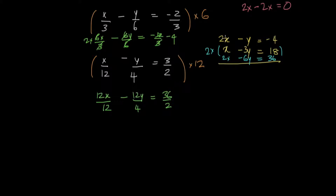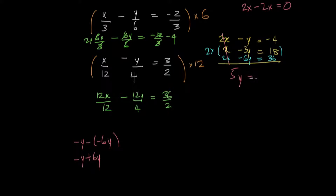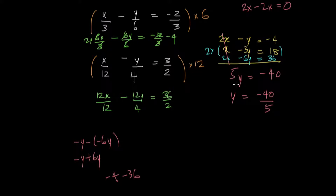If I subtract those, they cancel out. Negative y minus negative 6y gives me negative y plus 6y, and that just leaves me with 5y. Equals negative 4 minus 36, which gives me negative 40. So y equals negative 40 divided by 5 — dividing both sides by 5 — and y gives me negative 8.